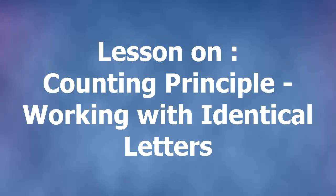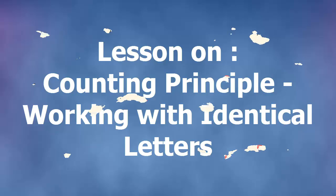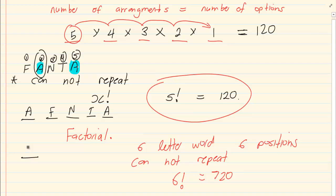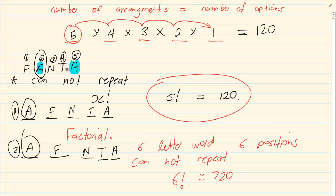Hi and welcome to my maths class. Today we are doing another rule regarding counting patterns. If you remember we had previously done the word FANTA, and what I had told you was that the A's are treated as different letters. When treated as different letters, if I put A in position 1 and another A in a different position, those count as two separate options — because one uses the first A and the other uses the second A. So we treated identical alphabets as different alphabets.